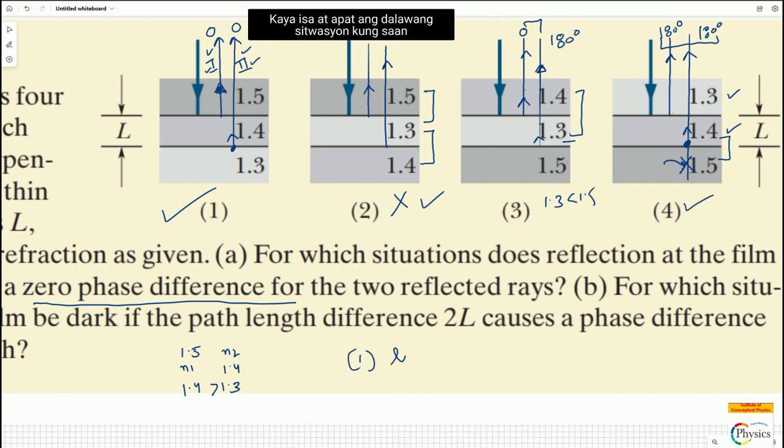So 1 and 4 are the two situations where despite the two reflections happening, no zero phase difference will be there between the two reflected rays. Thank you.